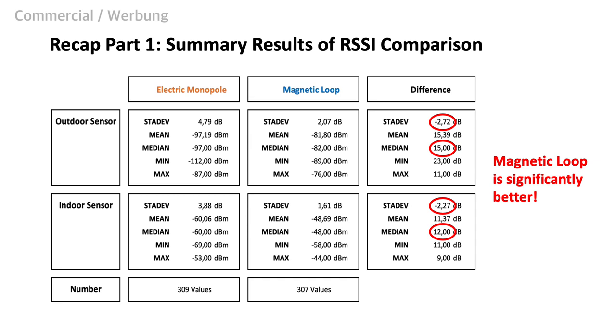In episode number 14, we also saw that the signal-to-noise ratio can be better with a magnetic antenna. And by the way, in case you are interested in real-life tests and wave propagation for LoRa, I can recommend episodes number 14, 15, 16 and 17.